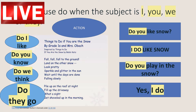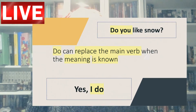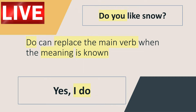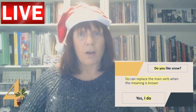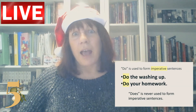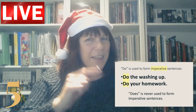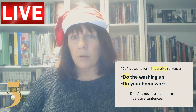You might use it to say: 'Do I like...?', 'Do you know?', 'Do we think?', 'Do they go?' So think about who you use 'do' with. 'Do' can also replace the main verb when everybody knows what you're talking about — if someone asks a question and you say 'yes, I do', it replaces the verb because the context is clear.